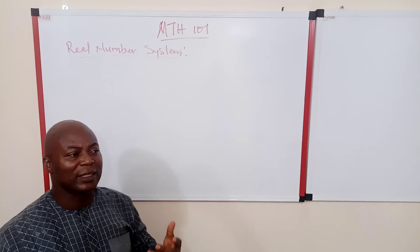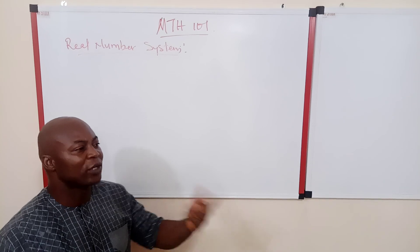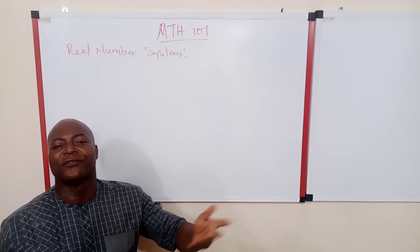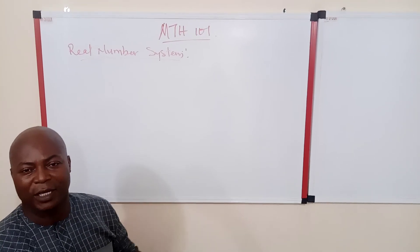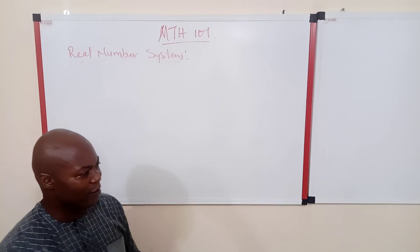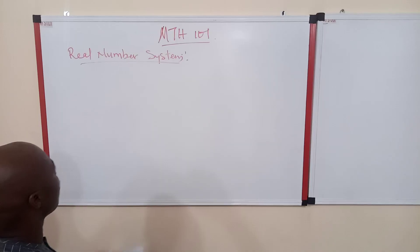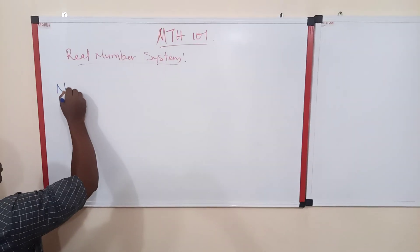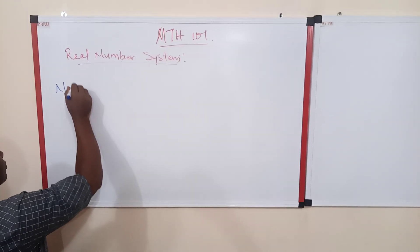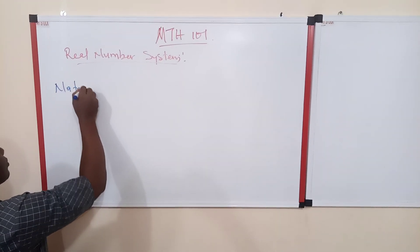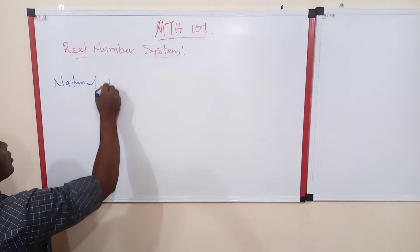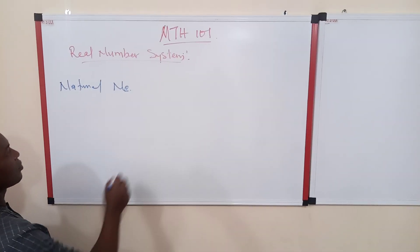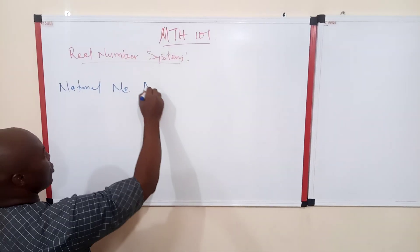If we want to discuss real numbers, we can discuss them in five different levels. The first of these is the natural number, which we use N to denote.